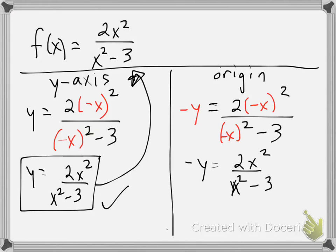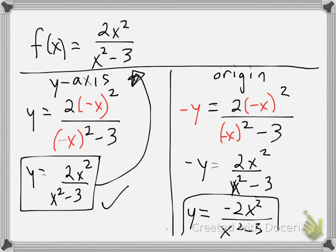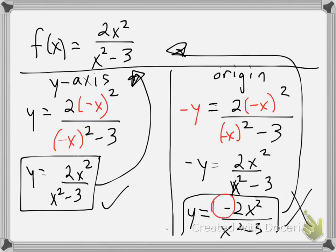Now I have a negative in front of the y. To move this negative, it moves to the numerator on the other side, giving me negative 2x squared divided by x squared minus 3. Is that the same thing we started with? The answer is no — this has a negative in the numerator where our original function does not. So we do not have origin symmetry, but we do have y-axis symmetry for this function.